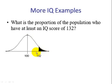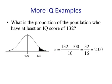So from the picture we see that this is less than 0.5. Our next step is to change 132 to a z-score. This ends up being 2.00. And using table 5 we look up 2.00. And we have to subtract it from 1 because it's a greater than. And we see that the answer is 0.0228.